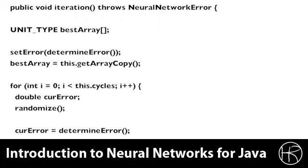You see that we first start out with creating a unit type array called best array. Unit type is a generic type that specifies the type that is used to make up the solution. In genetic algorithms, this was similar to the gene.